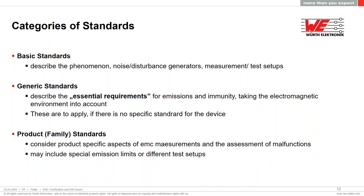Standards go in three different directions or groups: basic standards, generic standards, and product standards. Basic standards describe phenomena, noise generators, measurements, and measurement setups. Generic standards define the essential requirements for emissions and immunity, also taking environment into account. Product standards are concentrated on a certain product family and certain product applications.